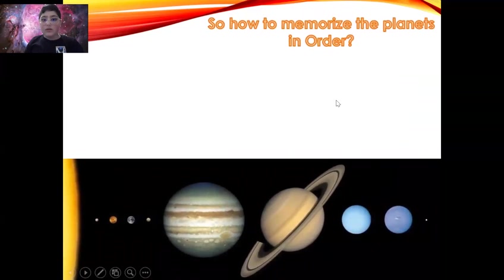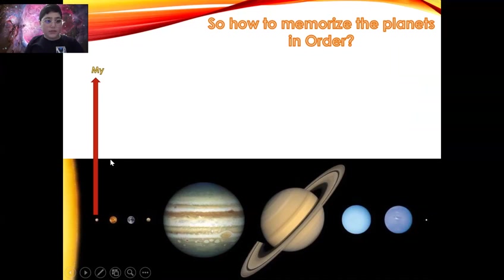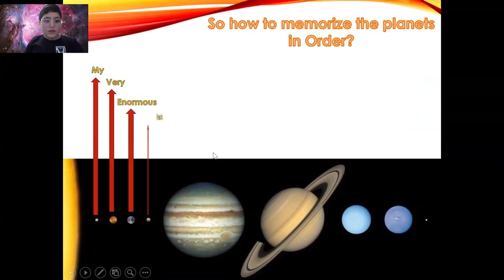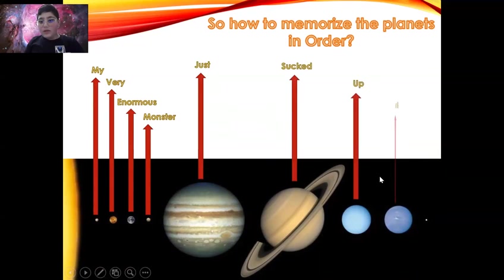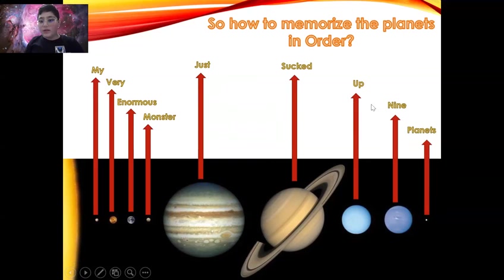So how do we memorize the planets in order? My is for Mercury, Very is for Venus, Enormous is for Earth, Monster is for Mars, Just is for Jupiter, Sucked is for Saturn, Up is for Uranus, Nine is for Neptune, and Planets is for Pluto. My very enormous monster just sucked up nine planets.